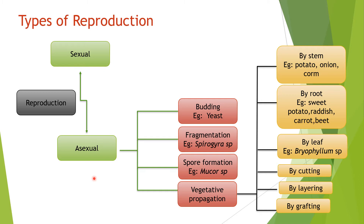We can classify asexual reproduction into many ways. The first one is budding, the next one is fragmentation, the third one is spore formation, and the last one is vegetative propagation. Vegetative propagation means that except the flower, from any part of the plant we can generate a new individual. It may be natural or it may be artificial.